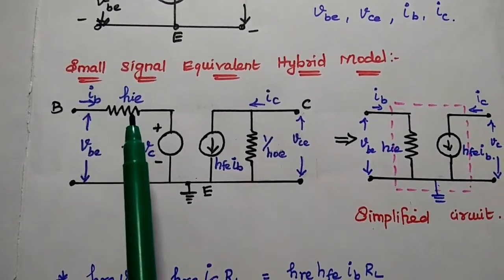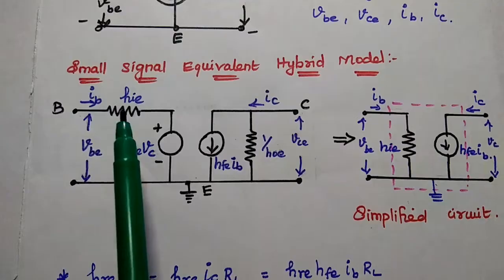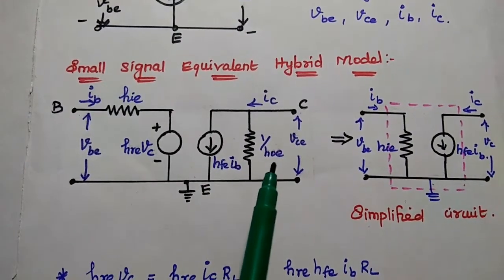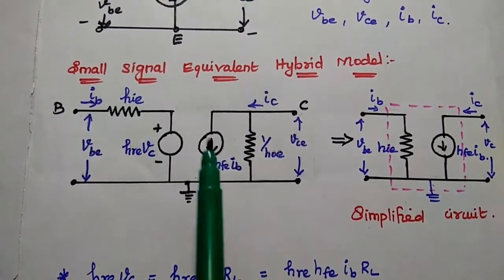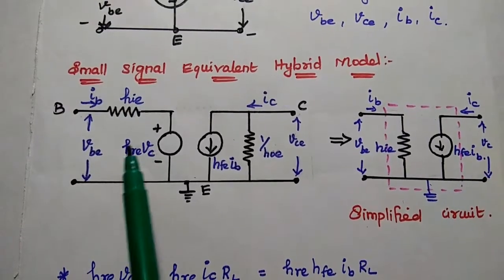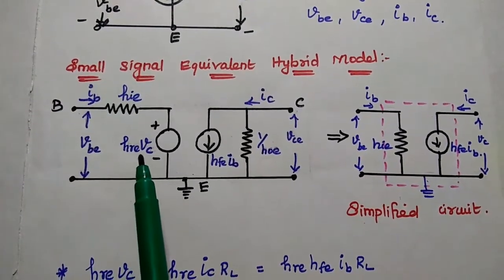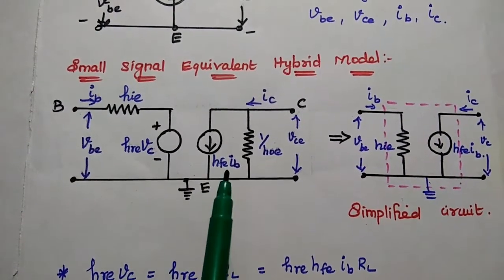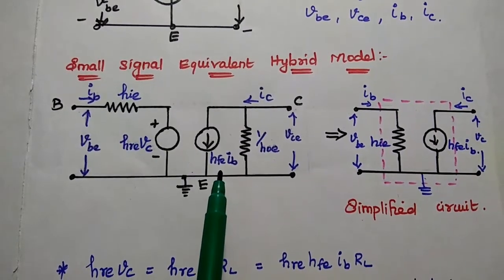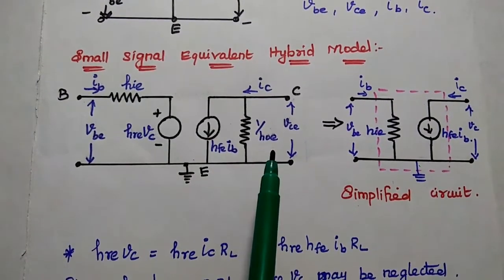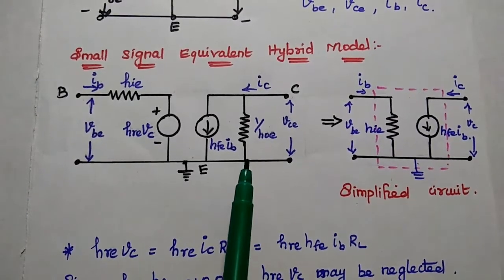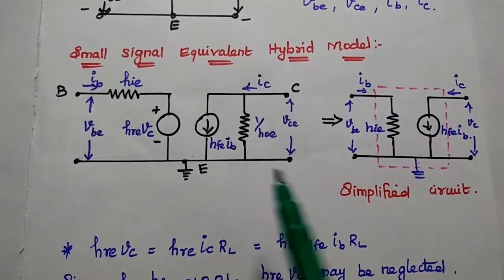Here H_IE is the input impedance. H_OE is the output admittance. H_RE represents reverse voltage gain, and H_FE represents forward current gain. The output side is analyzed with its admittance value.